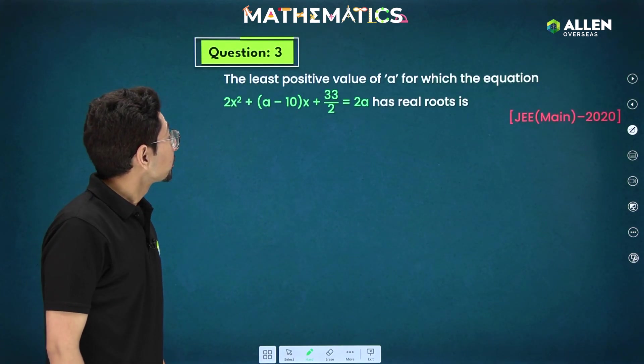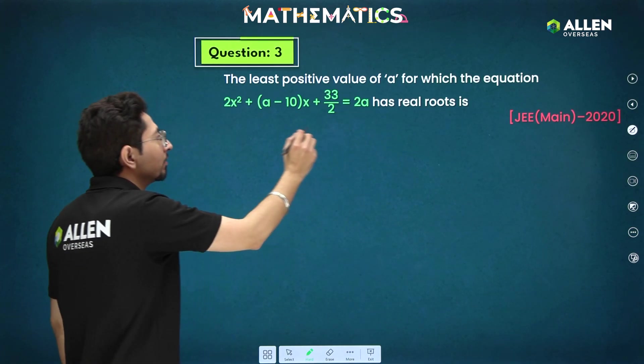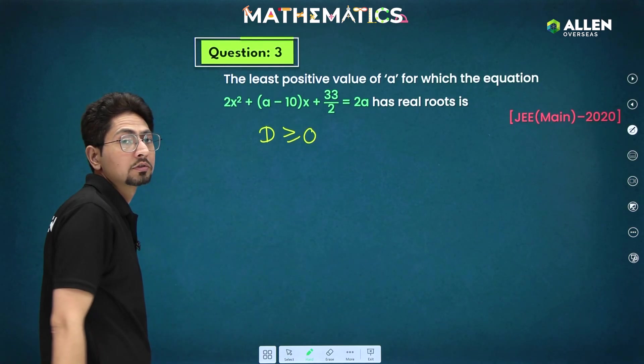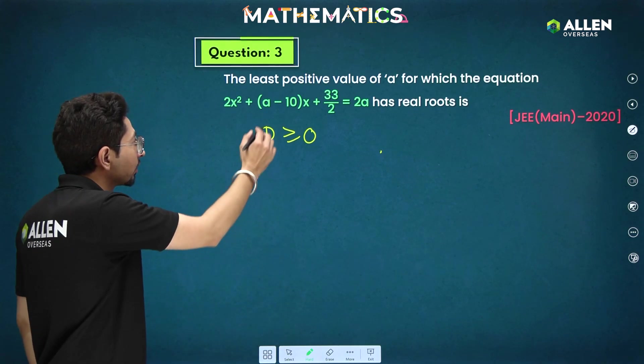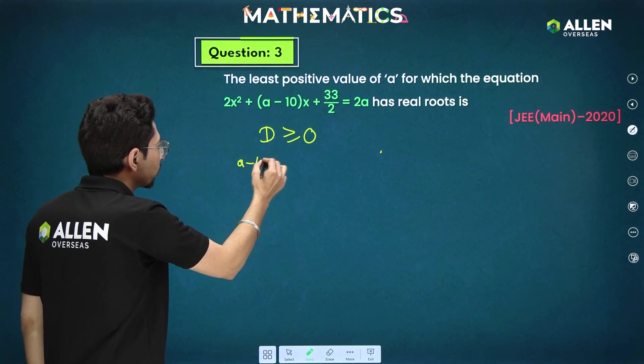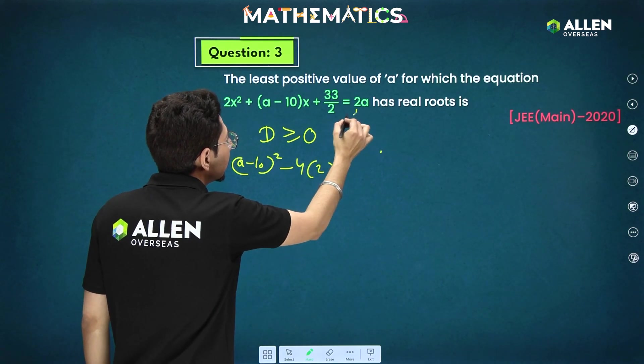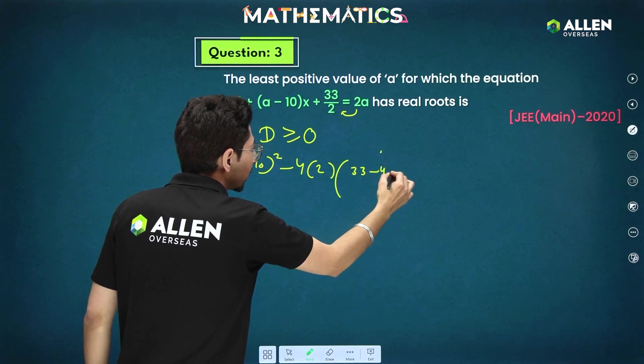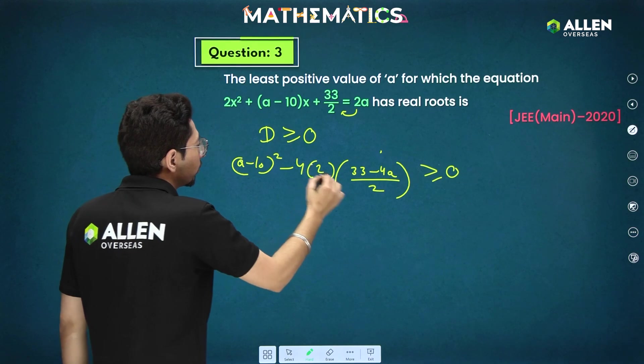Proceeding with next question. The least value of A for which the equation has real roots. Very simple condition. What is that? D should be greater or equal 0 for real roots. Only real. We have been given. So, you have to apply equality also. So, what will be discriminant (A - 10)² - 4 · A · (33/2 - 2A) ≥ 0. That will be taking LCM here. This must be greater or equal 0. This two can be cancelled out.